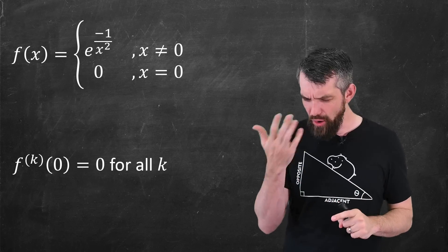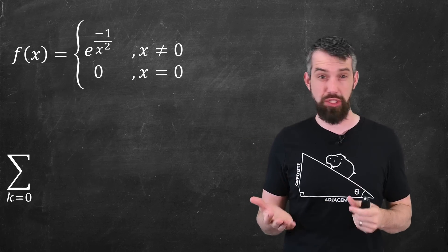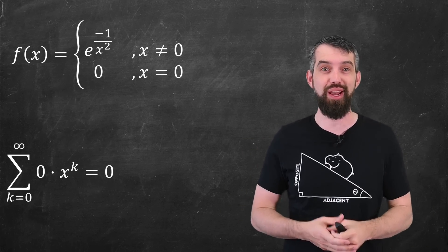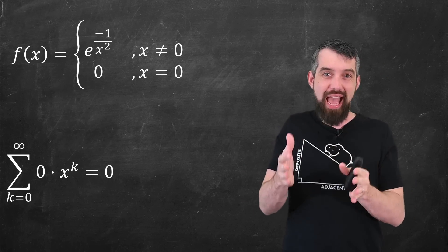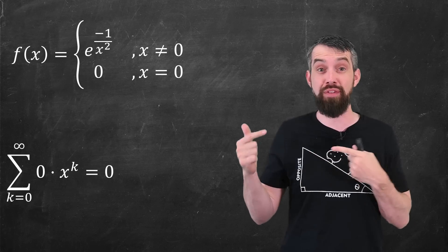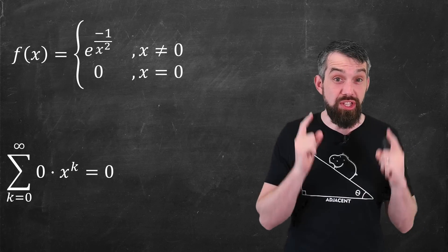So here's the point. All the derivatives for this function exist. So I can compute its Taylor series. Its Taylor series is nothing but 0 times x to the k for every value of k. This we call the 0 series.